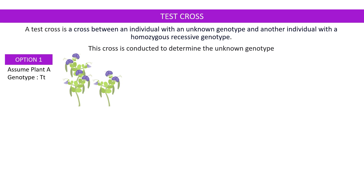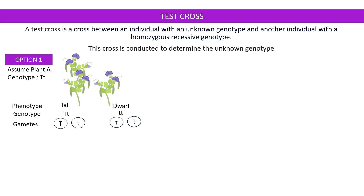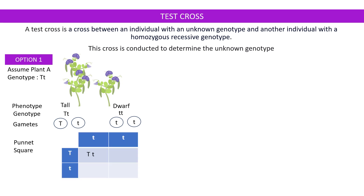In option one, we assume that plant A has a genotype capital T small t, so it is heterozygous. The genotype of the dwarf plant is small t small t. The gametes which the tall plant produces are of two types: capital T type gametes and small t type gametes. The gametes of the dwarf plant are all alike having small t alleles. When we do the Punnett square, we get a tall offspring capital T small t, another tall offspring capital T small t, a short offspring small t small t, and another short offspring small t small t. So 50% of the offspring are tall and 50% are dwarf.